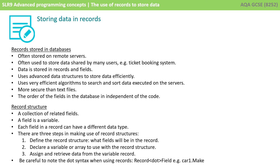Finally, we looked at the record structure available in some languages. This is simply a collection of related fields where a field is a variable. Each field in a record can have a different data type. We covered the three steps in making use of record data structures: define the record structure, declare a variable or an array to use, and assign and retrieve data. Remember to be careful to note the dot syntax when using a record.